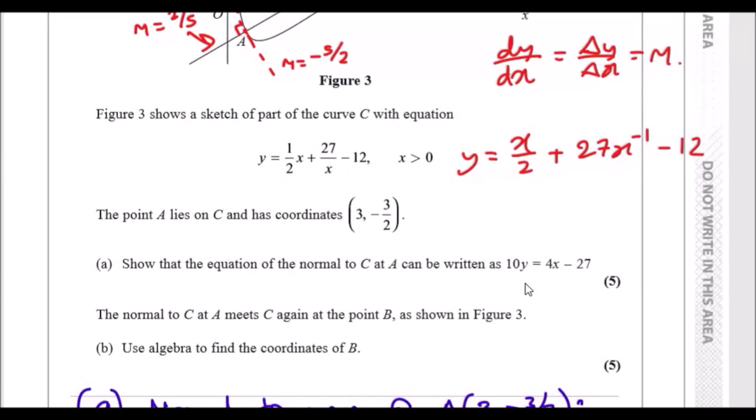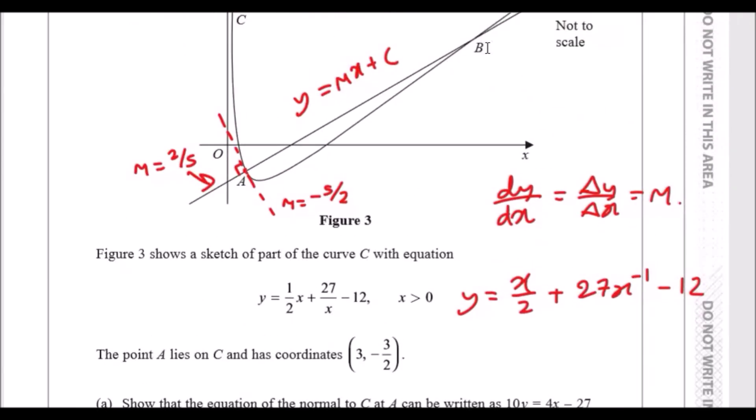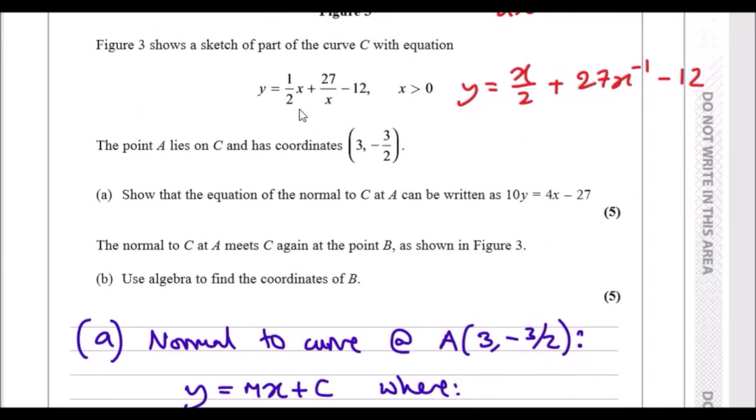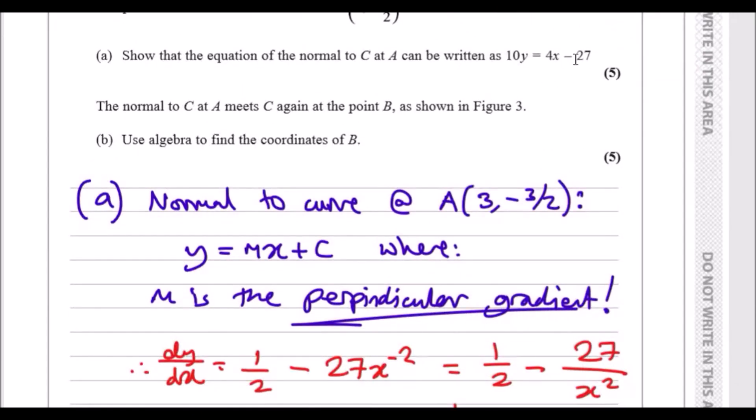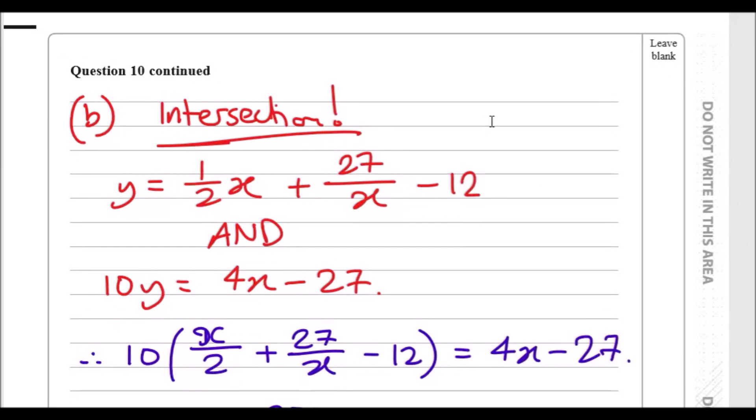Now let's look at part b, because this is the main part I was talking about earlier. It says that the normal to C meets the curve again at point B. So the normal to the curve at A meets at point B again. This means that the straight line intersects again with the curve. And as you remember, when two things intersect, we're talking about simultaneous equations.